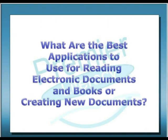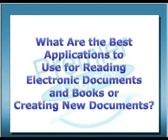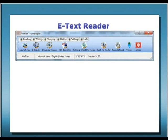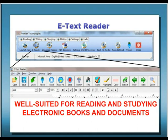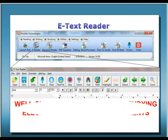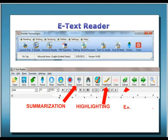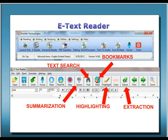What are the best applications to use when accessing documents and electronic books, or when creating new documents? E-Text Reader is a robust tool that not only lets you read electronic books and documents, but has sophisticated study aids that will give all students the ability to improve comprehension and retention. Because E-Text Reader works with formal documents, it is not suited for use with things such as emails and web pages — that's where Universal Reader Plus is your best choice. Within E-Text Reader, some of the valuable study aids are text summarization, highlighting with color, extraction by color, bookmarks, and text search. These features make E-Text Reader a powerful study tool for anyone.